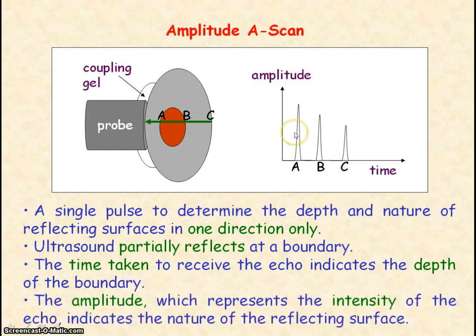The amplitude represents the intensity of the reflected ultrasound and so gives an indicator of the nature of the reflecting surface, because the reflected intensity depends upon the difference between the acoustic impedance of the media which makes the boundary. So you can identify whether the ultrasound has been reflected off bone or soft tissue.